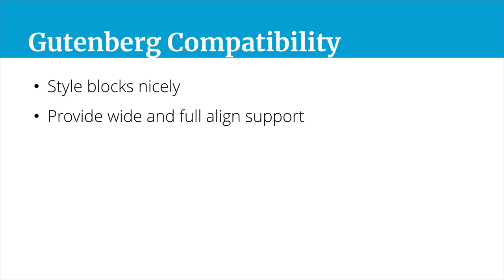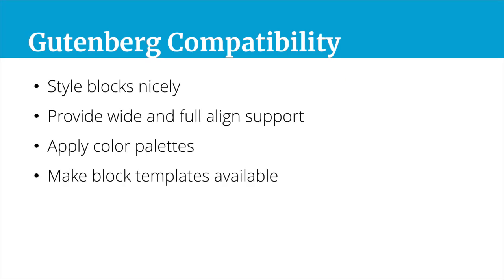I would say that in order to really consider your theme Gutenberg compatible, wide and full width alignment is a feature that you will need to provide support for. Additionally, you could apply color palettes, which are a great idea, although possibly optional. And you could code out some block templates depending on the niche of your theme, although these may be optional. You may also want to look at customizing the editor styles beyond just styling the normal blocks, though this is something that is completely optional and will take place less frequently.